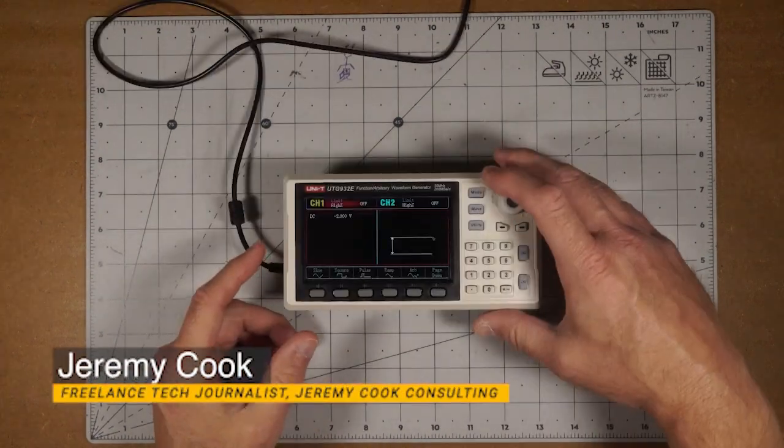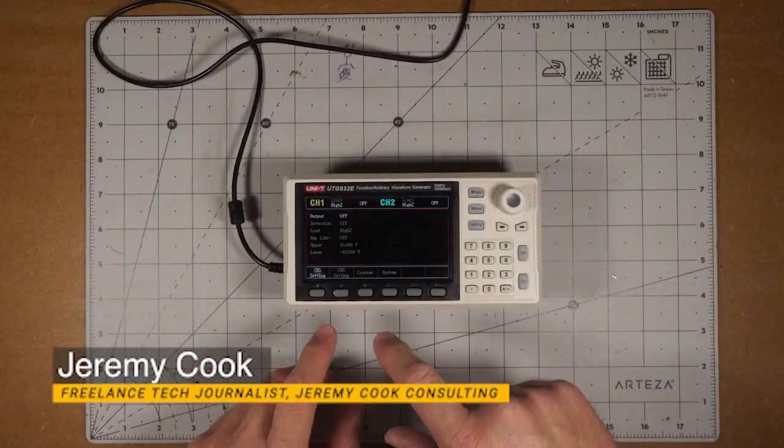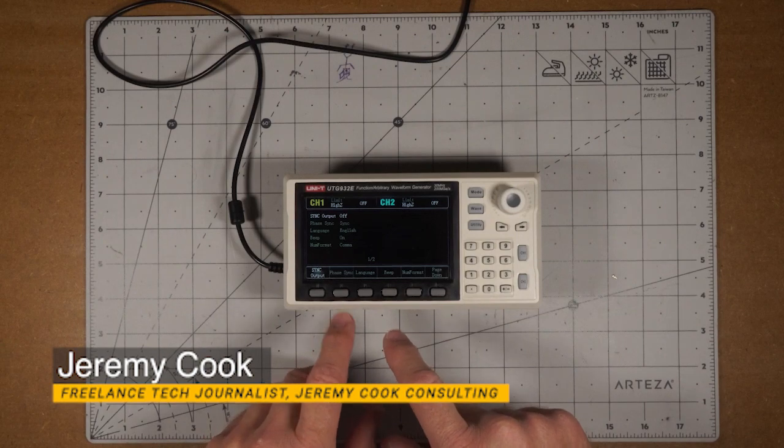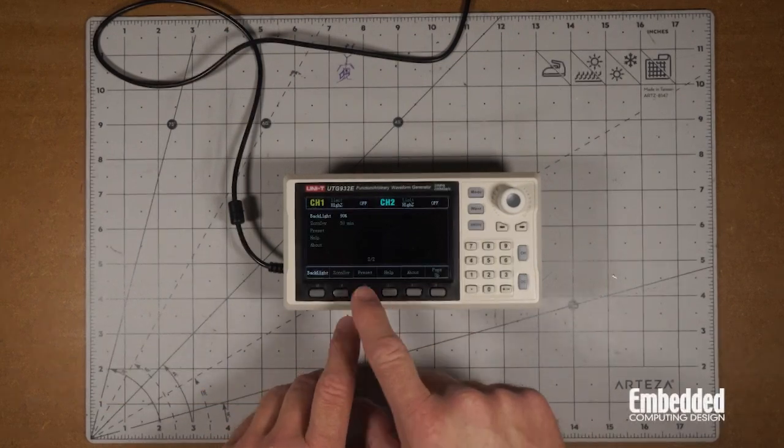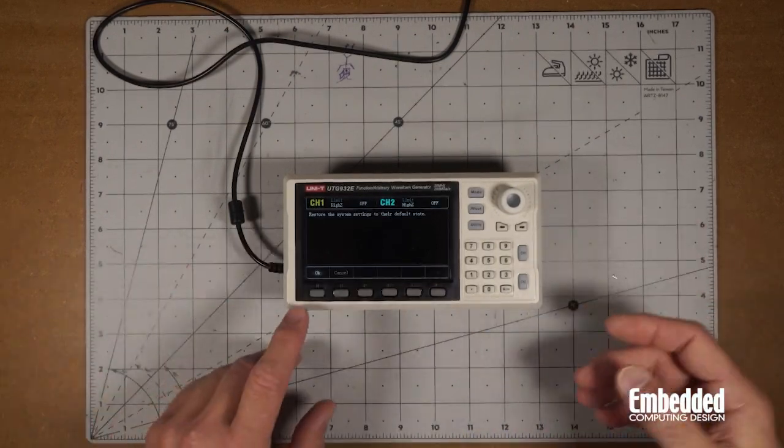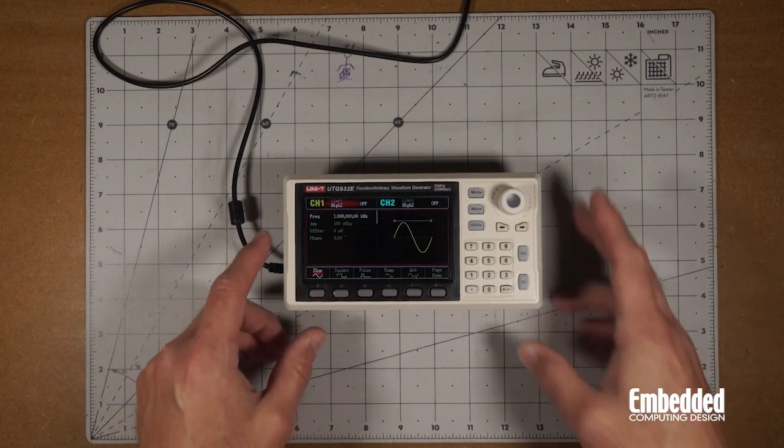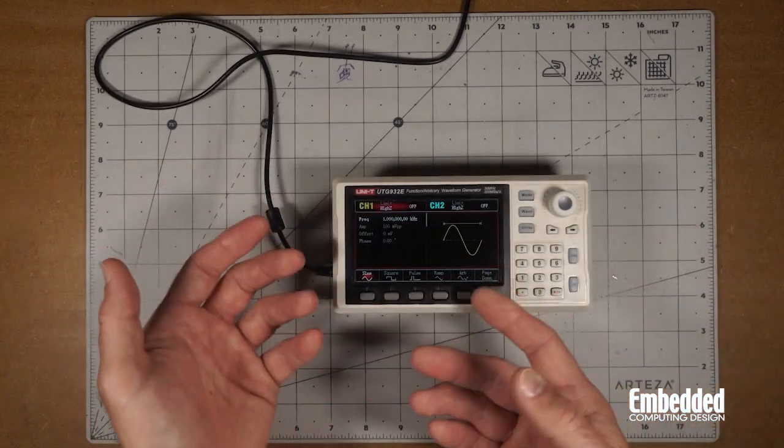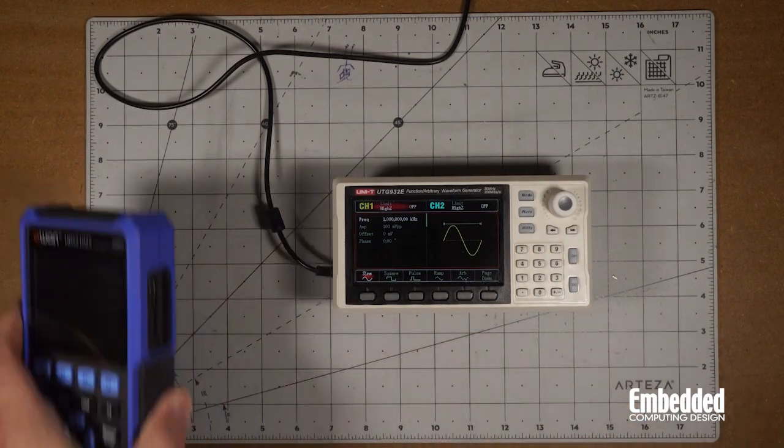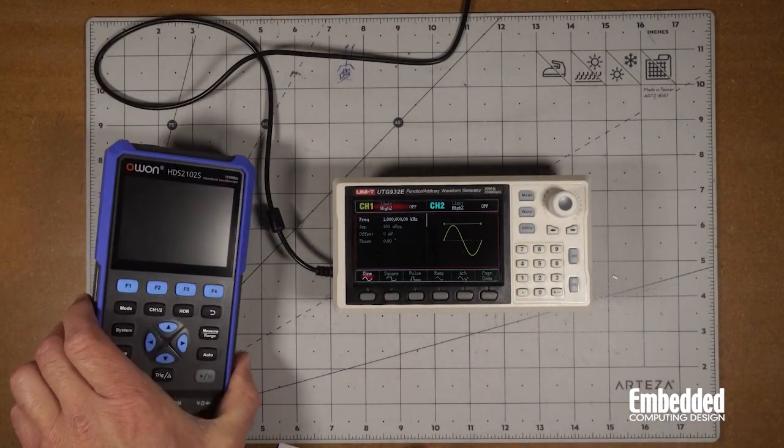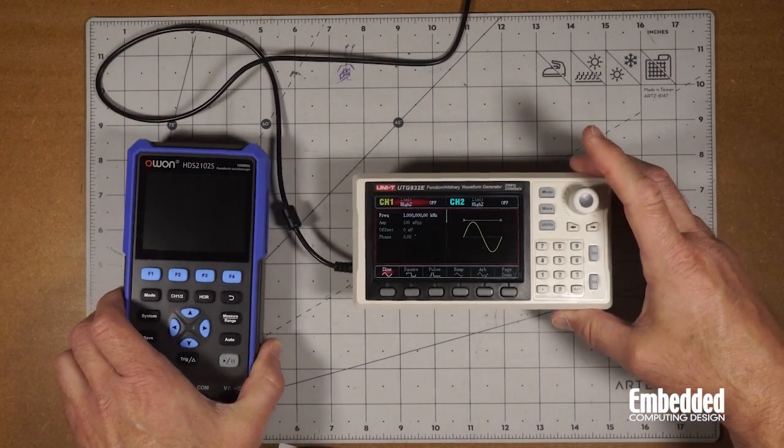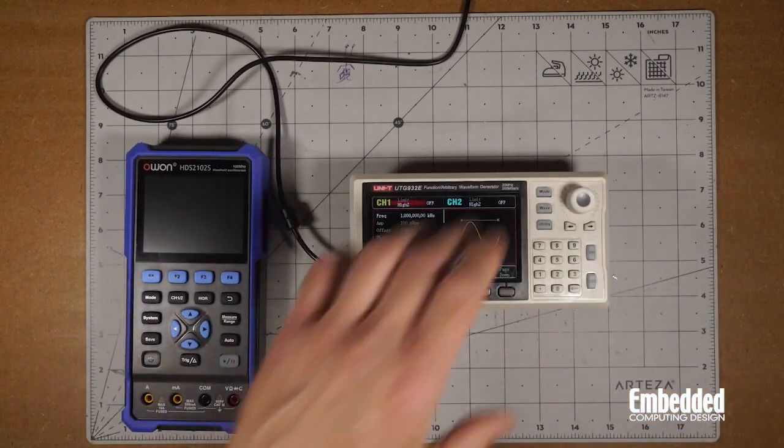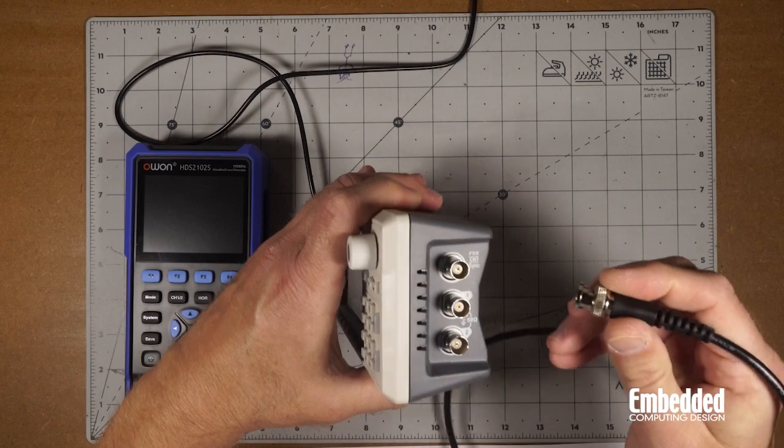We'll turn it on, go into utility, system, page down, and do preset to set it back to default settings. You can see here it's a sine wave at one kilohertz. We'll hook this up to a portable oscilloscope, the Owon HTS-2102S, using this BNC to BNC connector.